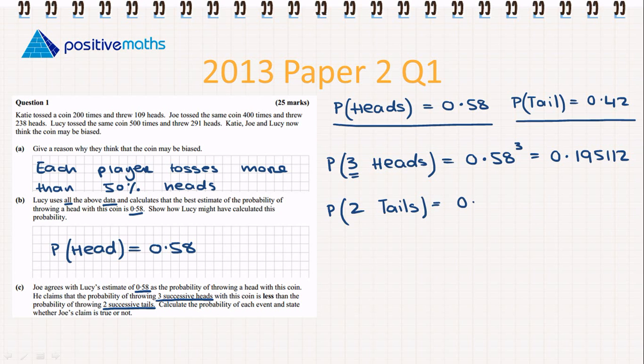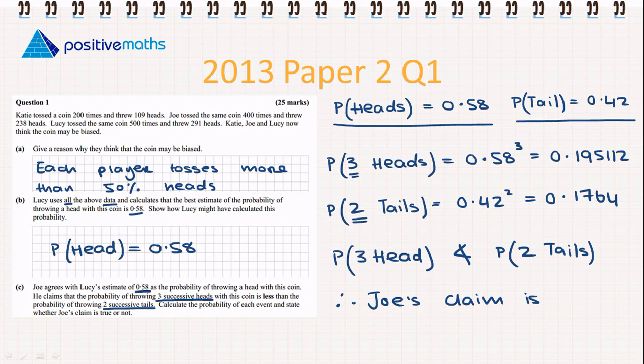The probability of tossing one tail is 0.42. If it's twice, it's 0.42 squared, which equals 0.1764. So the probability of tossing three successive heads is not less than the probability of tossing two successive tails. Therefore, Joe's claim is not true.